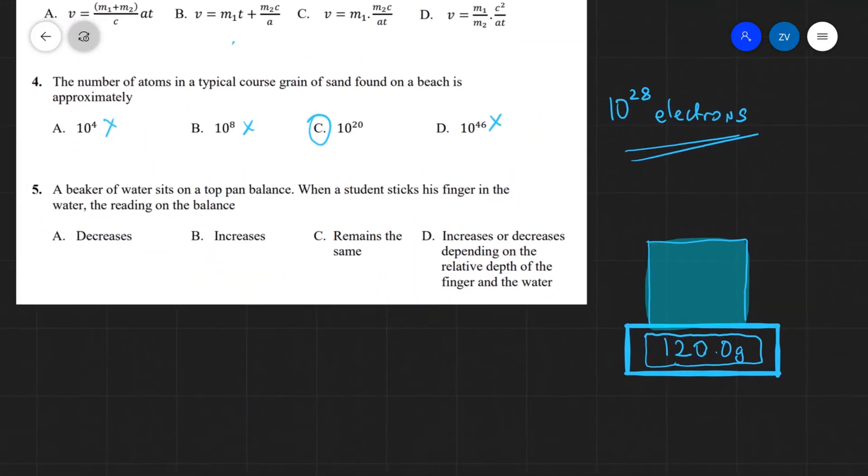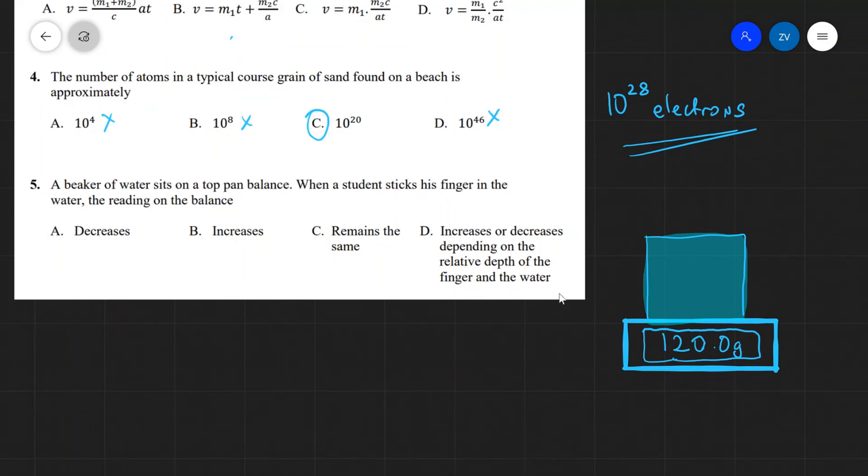Final question. We have a beaker of water sitting on a top pan balance. Then when a student sticks his finger in the water, the reading on the balance, what happens to it?